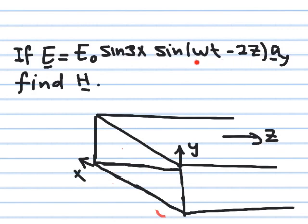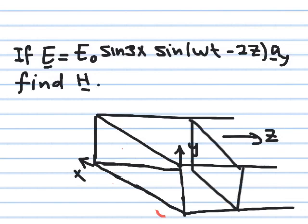The field is traveling in the z direction — it has a cosine or sine of (omega t minus beta z), so it's a sinusoidal traveling wave. But if you take a cross-section at any instance, freeze time and look at the field, you see something interesting: the field behaves like a sinusoidal waveform in x. With a sine(3x) term, you can get a half-sine profile where the electric field is very strong in the middle of the waveguide and zero at the edges.